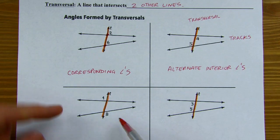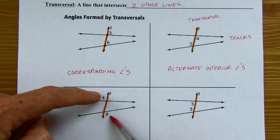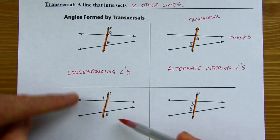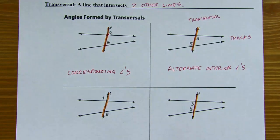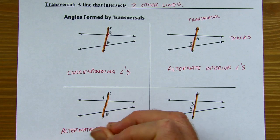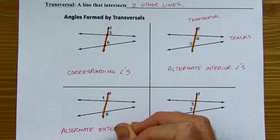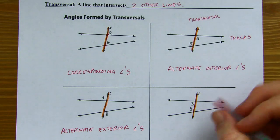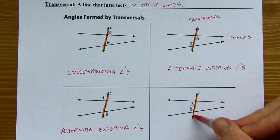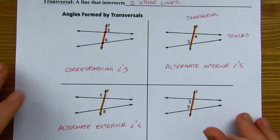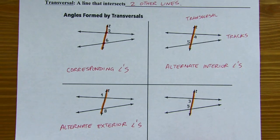In a similar way, angles 1 and 8 are still on different sides of the transversal — alternate sides — but this time they're on the outside of the tracks. So they're going to be alternate exterior angles. And our last pair: angles that are on the same side of the transversal and on the inside of the tracks — I often refer to these as same side interior angles.